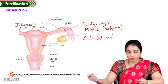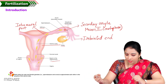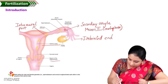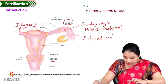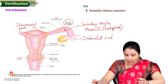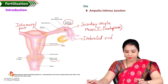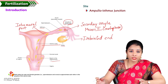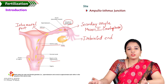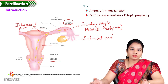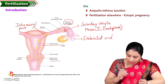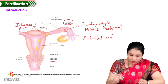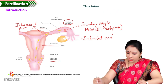Fertilization usually occurs in the ampulla of the uterine tube — more specifically at the junction of the isthmus and ampulla, called the ampullo-isthmic junction. This is the normal site of fertilization. If fertilization occurs elsewhere, it may result in an abnormal or ectopic pregnancy, which we will discuss later.